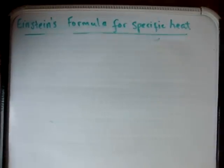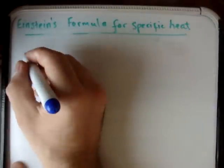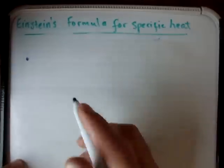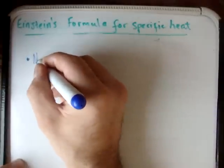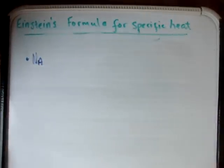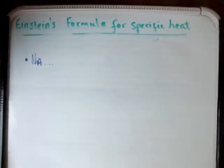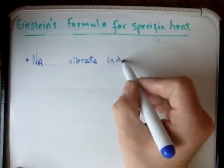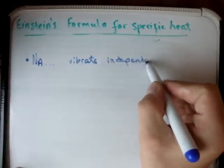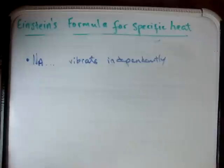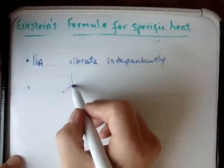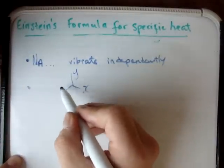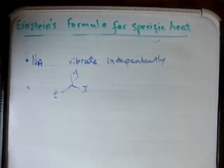Einstein made a couple of assumptions. The first was that he had Avogadro's number of molecules — so he had one mole, basically — and each of these could vibrate independently. He said they could each vibrate in the three spatial dimensions: x, y, and z. Which is a fair enough assumption.